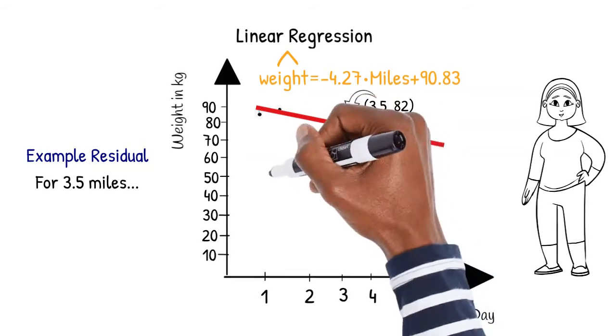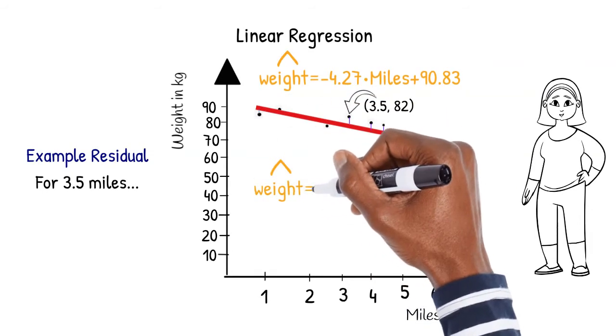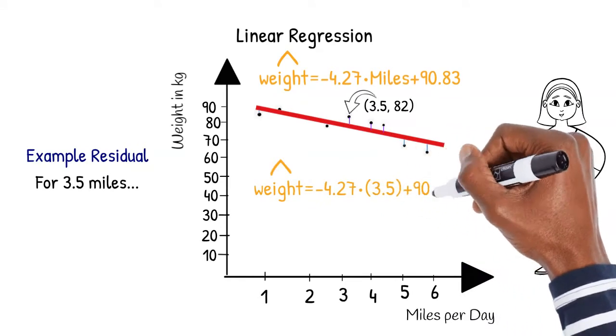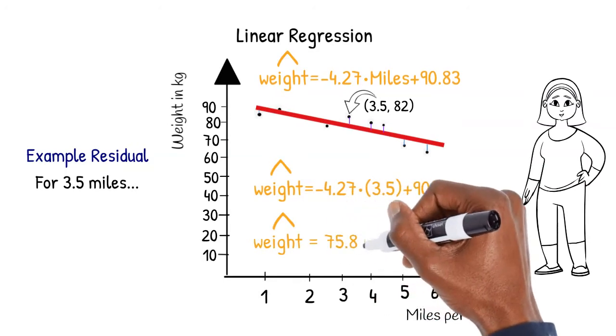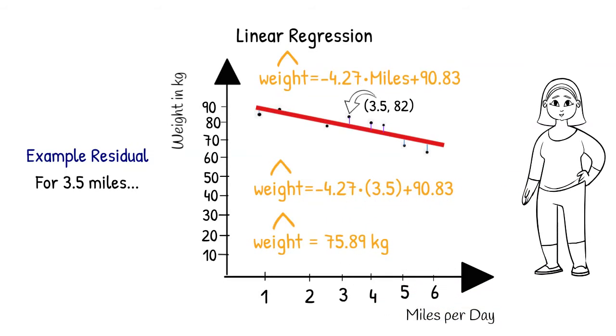Weight equals negative 4.27 times 3.5 plus 90.83. Weight is equal to 75.89 kilograms.